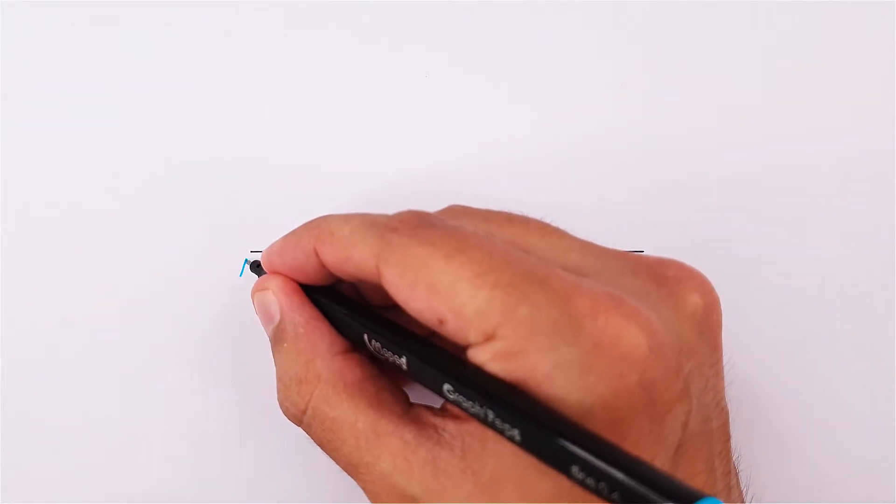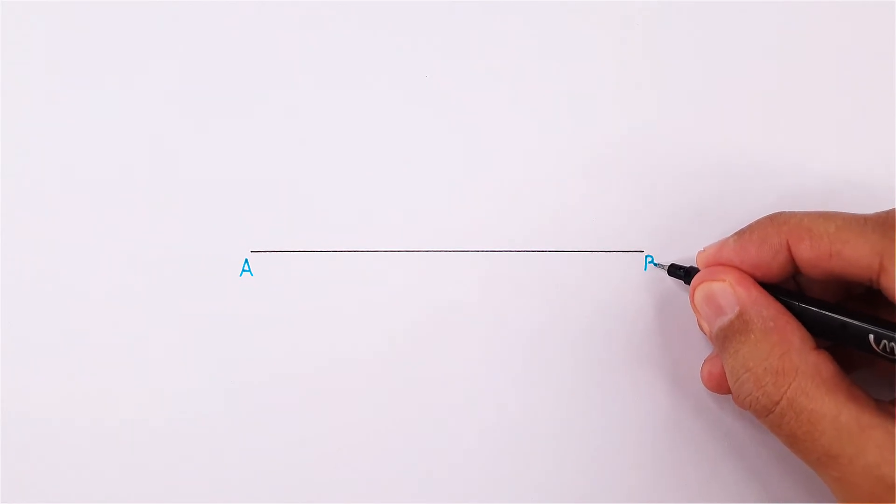Start off by drawing a line with no specific measurement and labeling it as line AB.